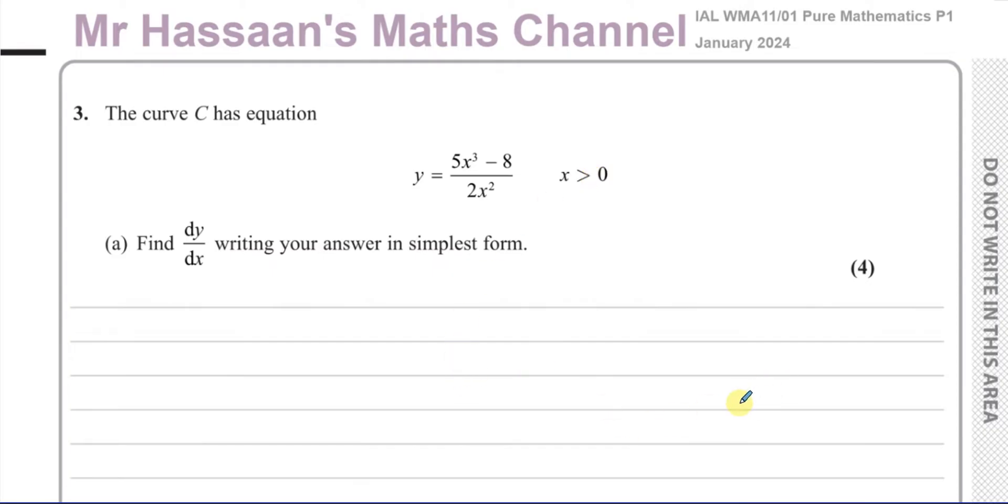We're asked to find dy/dx writing your answer in simplest form. When we have an expression like this in P1, we're going to separate this into two separate terms so we can differentiate it. In P1 we haven't learned any other techniques. What you cannot do is differentiate the numerator and differentiate the denominator separately. You can't say this is 15x squared over 4x. That doesn't work. When you have a quotient or product, you cannot work in that way. So for us in P1, we must split this fraction into two separate fractions.